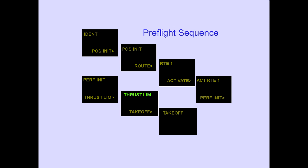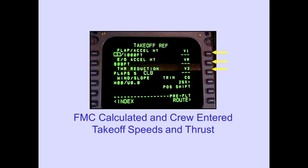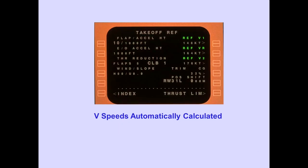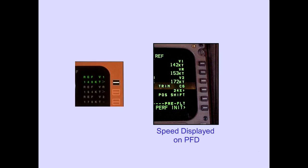The pre-flight sequence continues on the takeoff page, which displays FMC-calculated and crew-entered takeoff speeds and thrust. The V-speeds for takeoff are automatically calculated and displayed on the takeoff page with the flap setting entered and entries complete on the PERF-INIT page. Line selecting a V-speed removes the reference and caret display, changes the speed to large font, and the V-speed is displayed on the PFD.